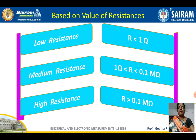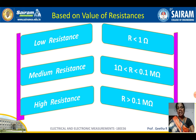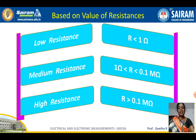Why is resistance classified as low, medium, or high? Because based on the measurement methods, the method used to measure low resistance may not be suitable for measuring medium resistance, and vice versa. Similarly for high resistance — certain methods are specifically available for low resistance, others for medium resistance, and others for high resistance within a particular range.